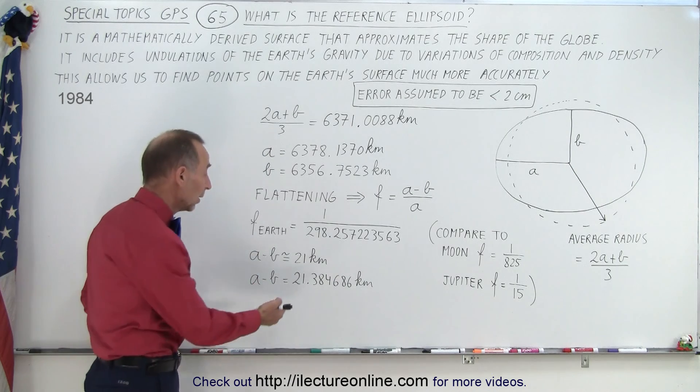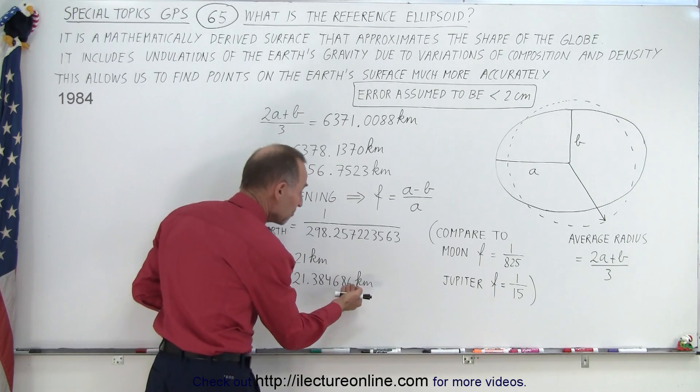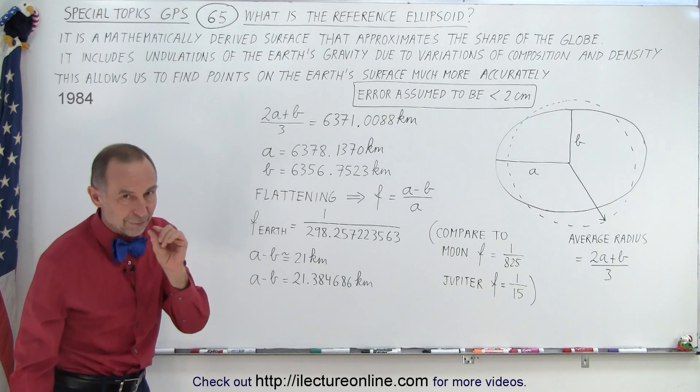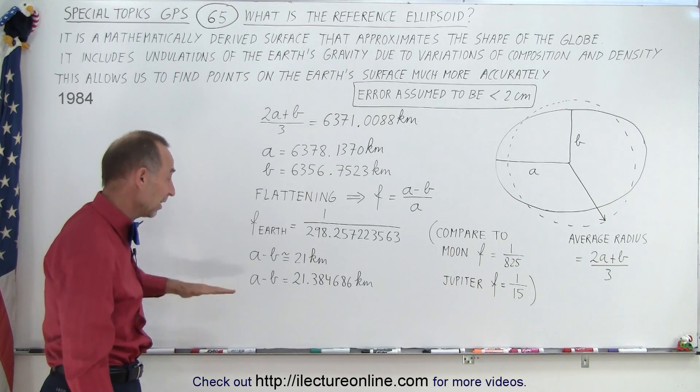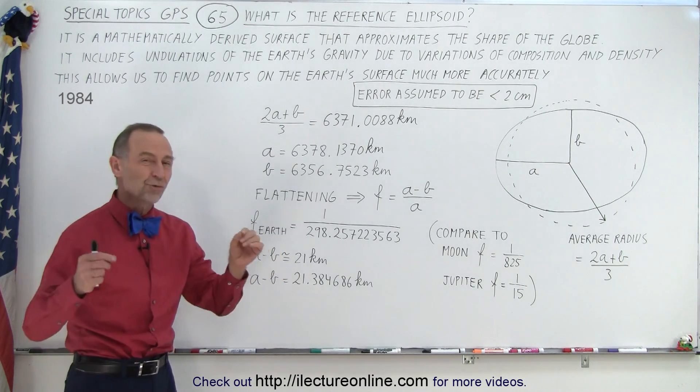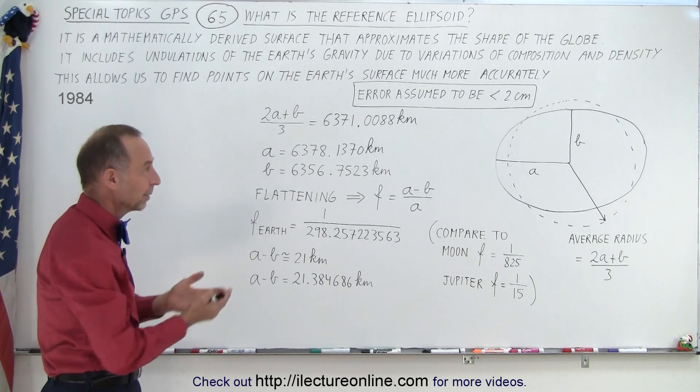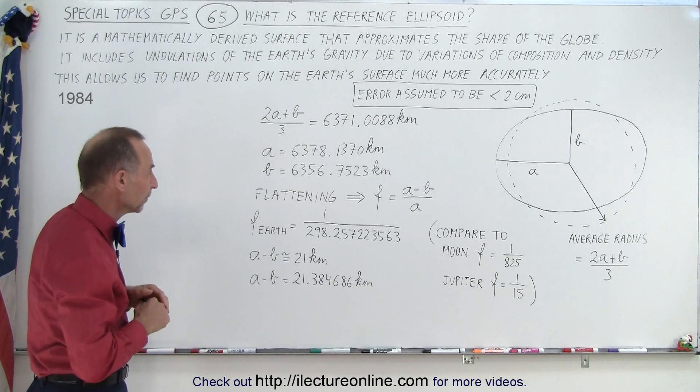Now in actuality, we can get it down to the nearest millimeter. So we're probably off by a few millimeters there, but nevertheless, we can get those distances extremely accurate based upon our mathematical ellipsoid model.